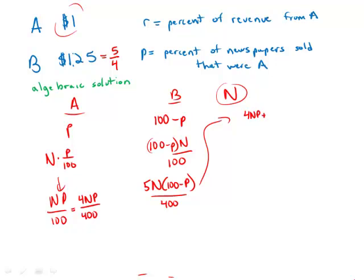And what this simplifies to—we can factor out the N—we get N times 500 minus P over 400. And so this is the whole.